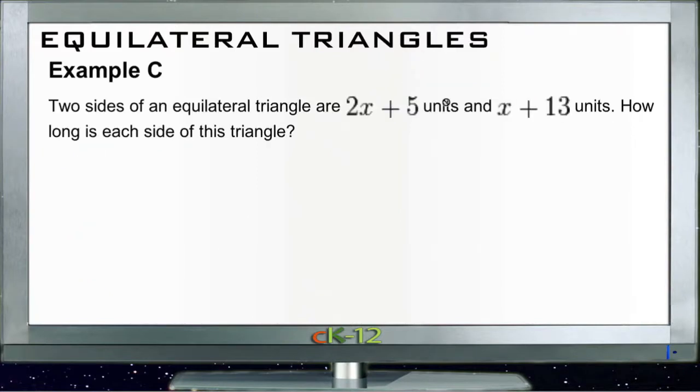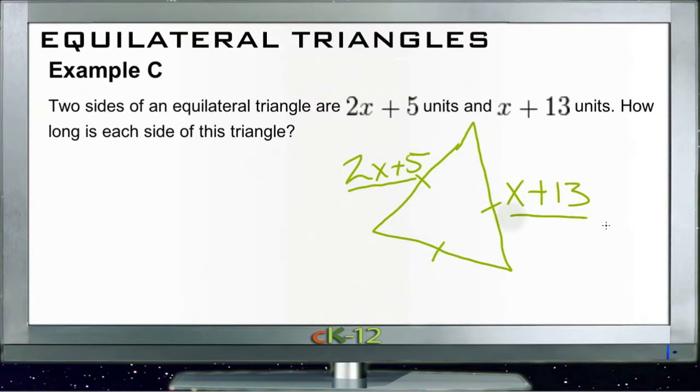And then finally example C. Example C tells us that two sides of an equilateral triangle are 2x plus 5 units and x plus 13 units. So if we have our equilateral triangle, I'm just gonna do a quick sketch here. All three sides are the same. One side is 2x plus 5 and one side is x plus 13. We don't think about the other side but it doesn't matter. We know that 2x plus 5 must be the same thing as x plus 13.